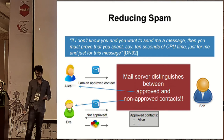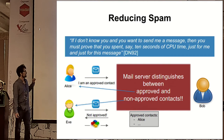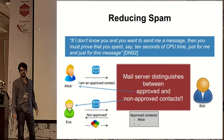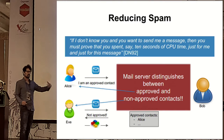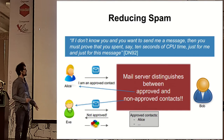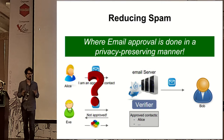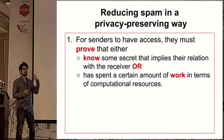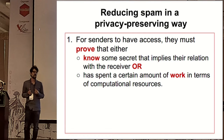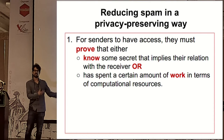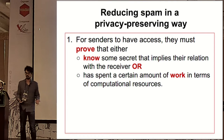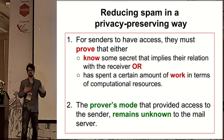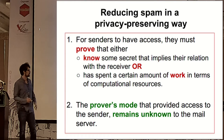The problem is that there is some leakage of privacy here, because with the DN92 approach the mail server learns Bob's contacts. A nicer idea is how to preserve the privacy of the contact. You would use a tool where senders can prove either they know something relating them to the receiver, or they have spent some amount of resources — done in a privacy-preserving way so that the prover's mode of proving remains unknown.